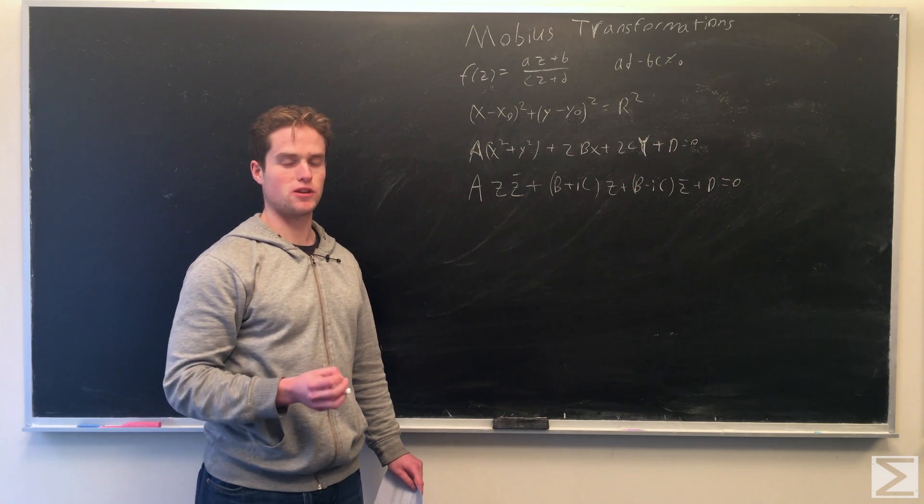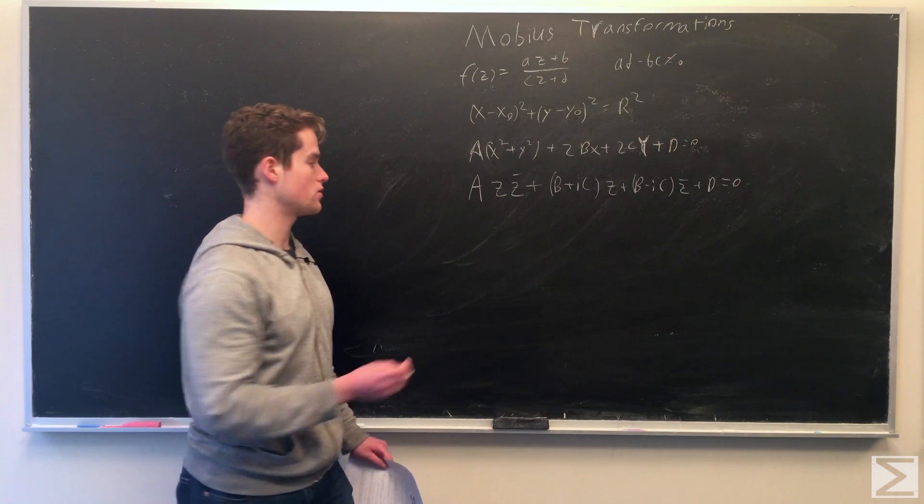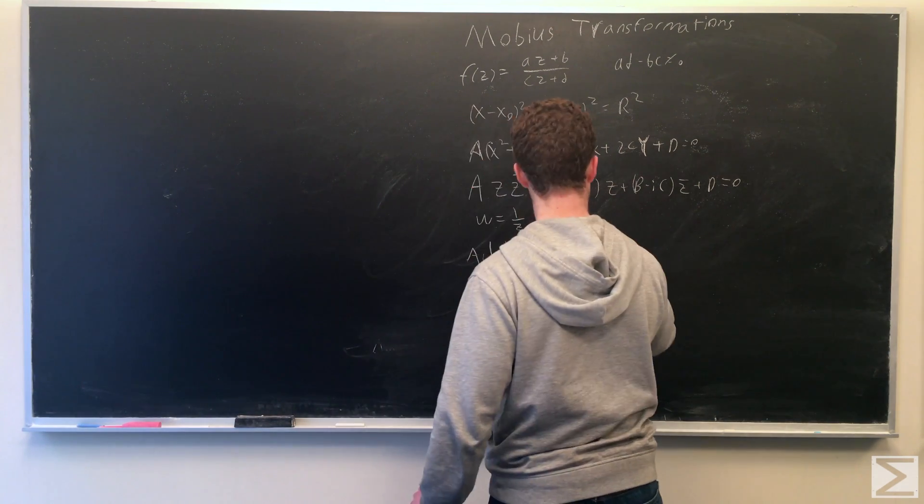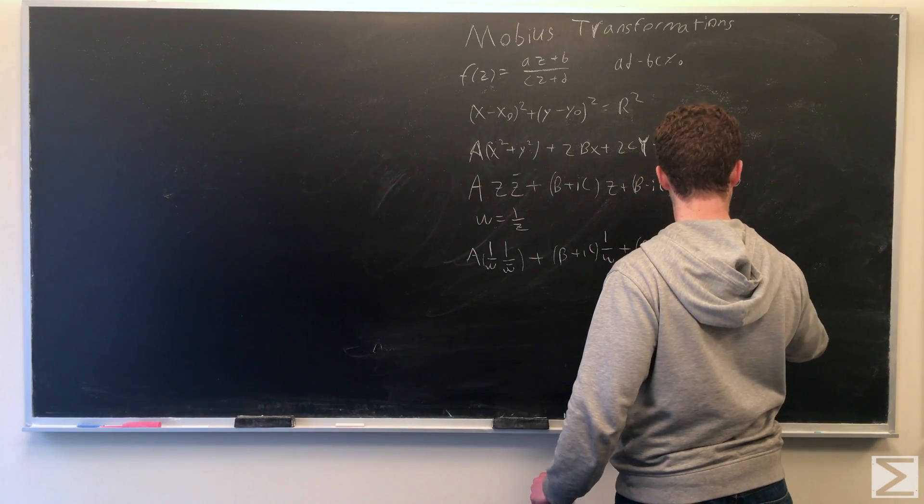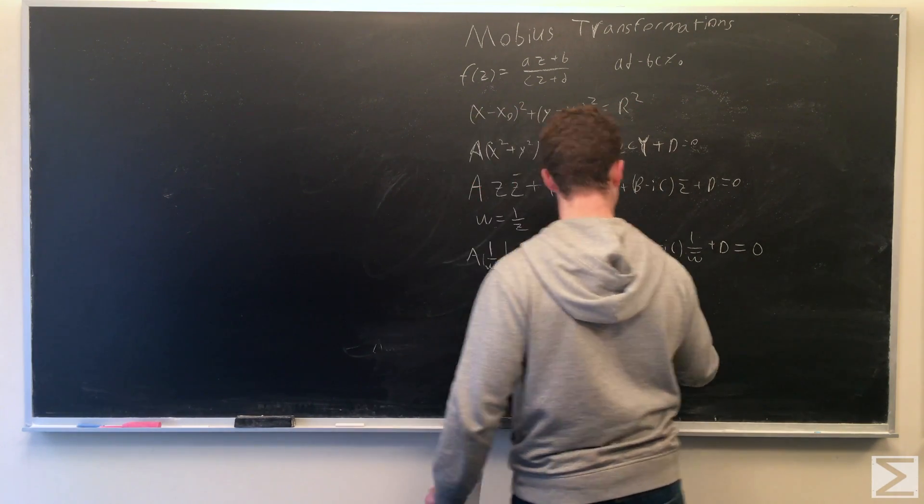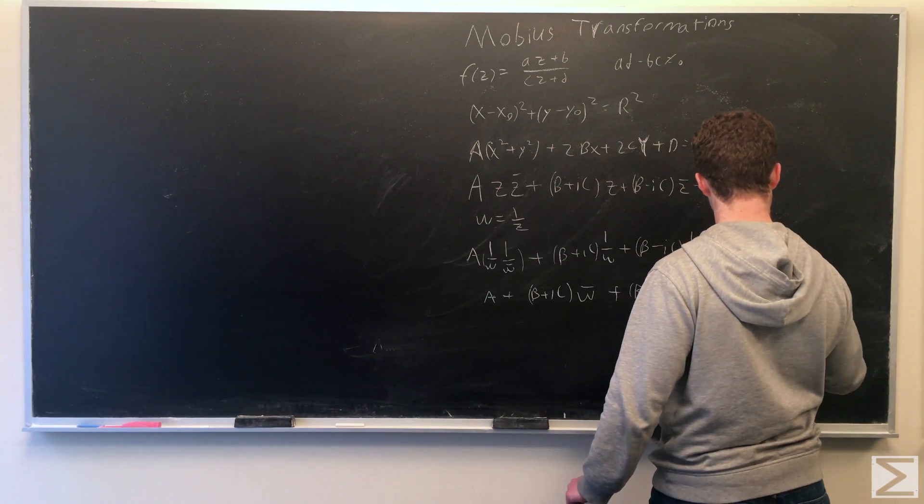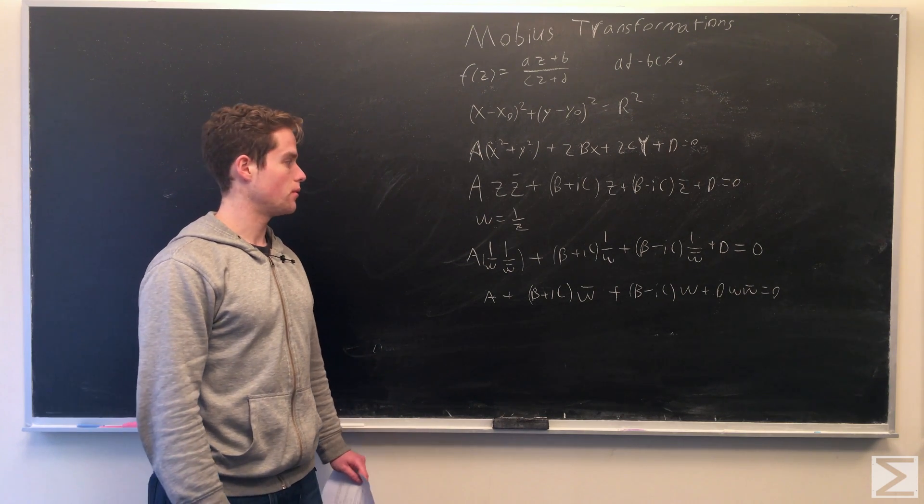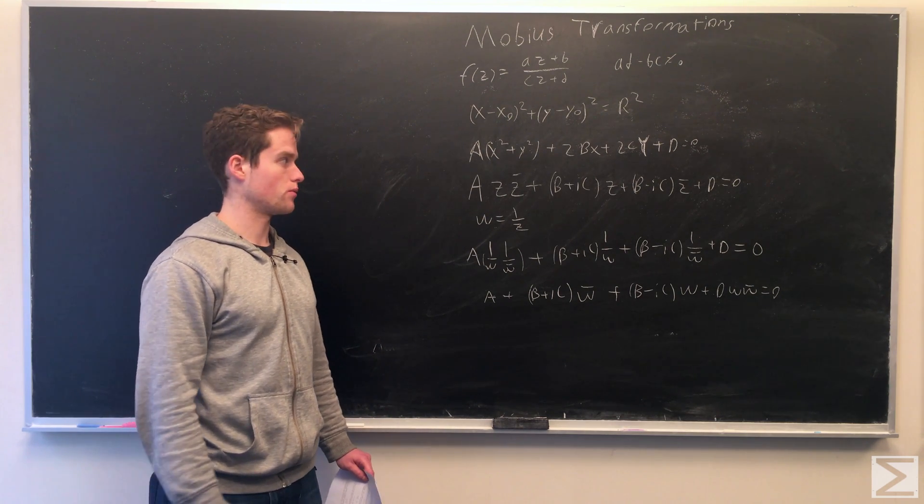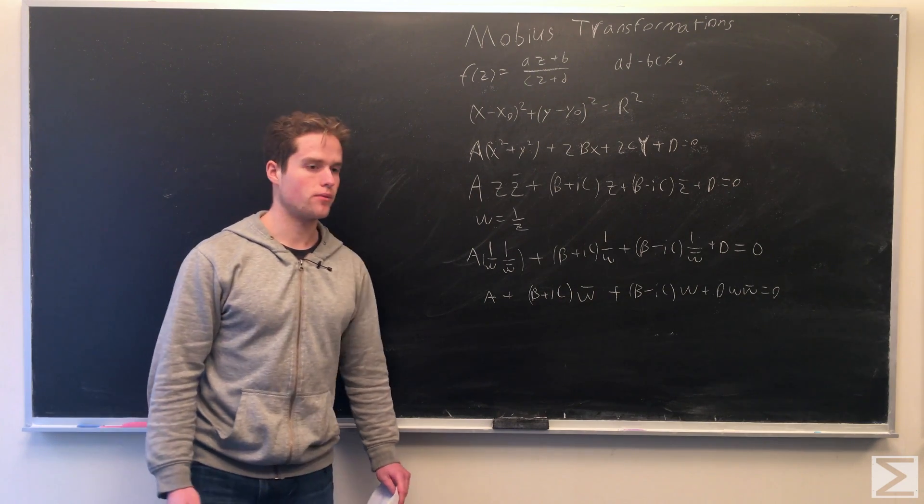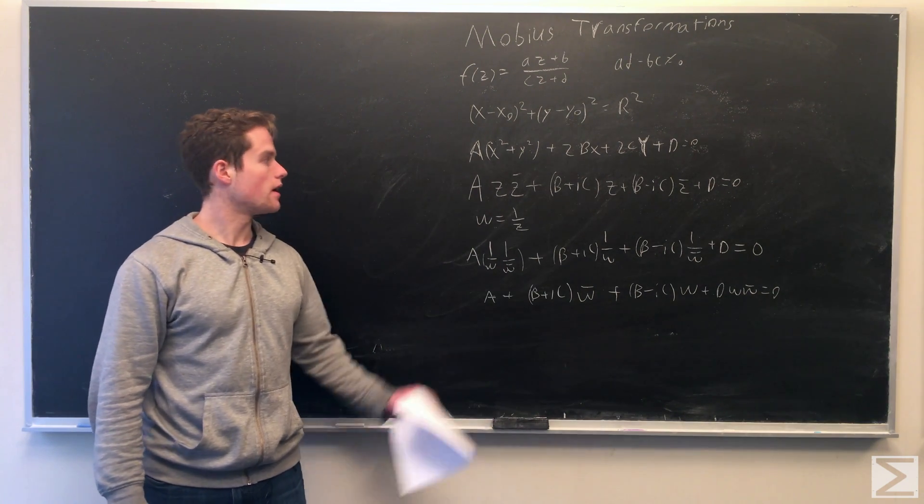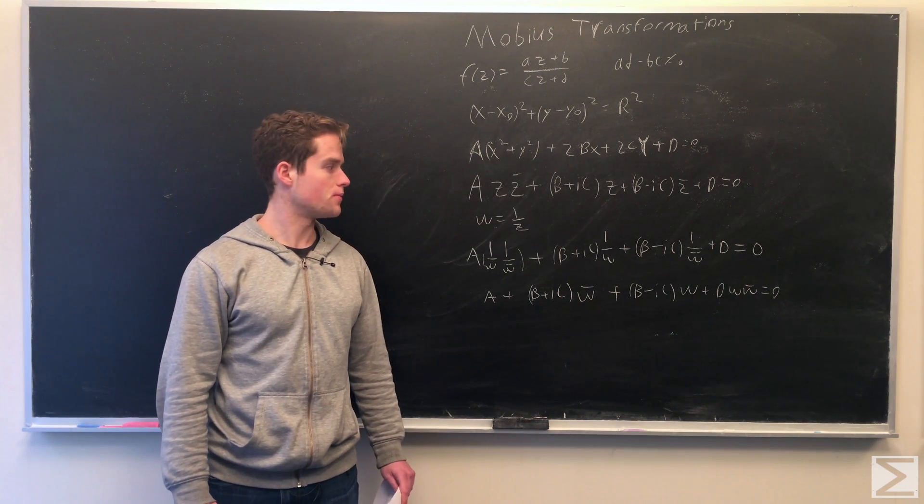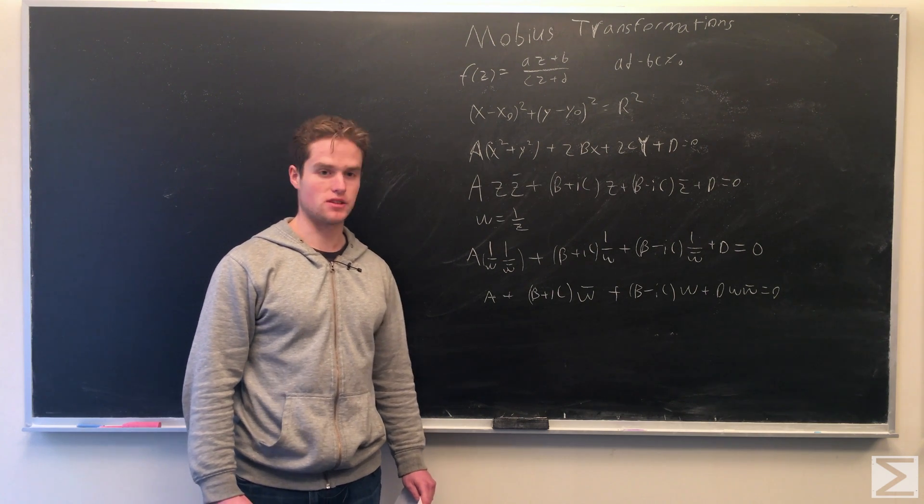And so now sort of the transformation sending z to 1 over z. So substituting 1 over w for z and 1 over conjugate of w for conjugate z, we have this line 1 over w, 1 over w conjugate plus b plus ic, 1 over w plus b minus ic, 1 over w conjugate plus d equals 0.